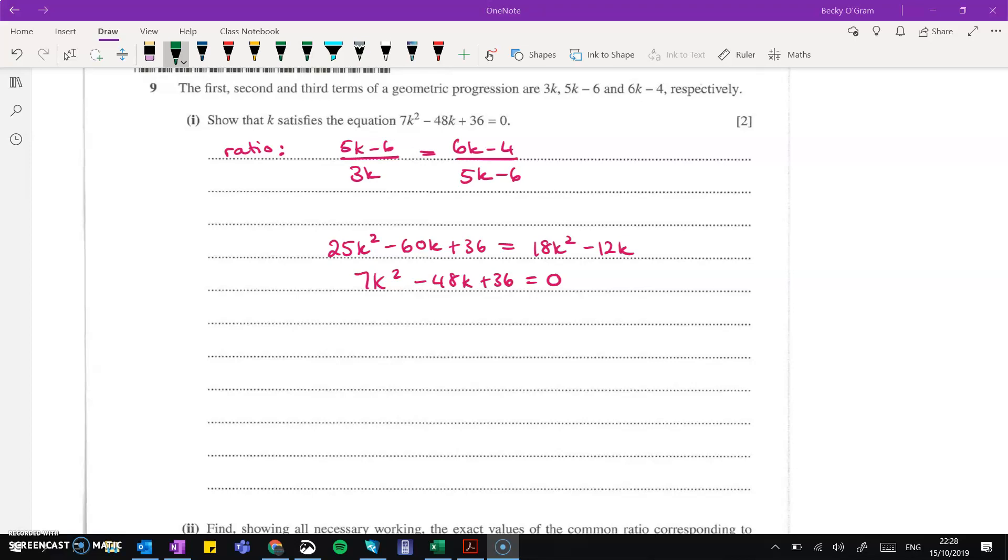But the geometric progression means that the ratio between a term and the one that comes after it is the same every time. So the ratio is always the term divided by the term that came before it. We can do that for the second divided by the first term and then also the third divided by the second term here. And we know that that ratio will be equal. So then we can work through the algebra there to get the expression that was required in the question.